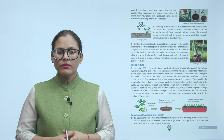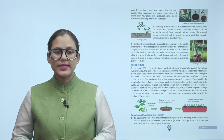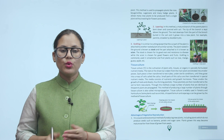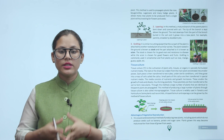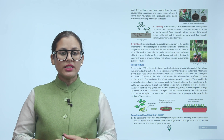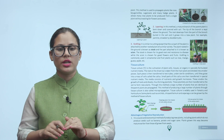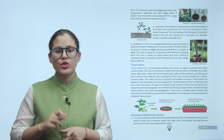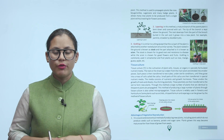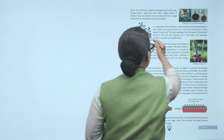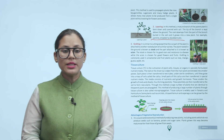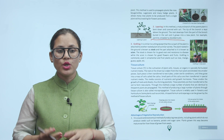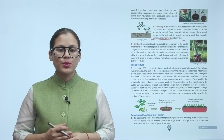Layering: a mature branch of the parent plant is bent down and covered with soil. The tip of the branch is kept above the ground. Roots develop from the part of the branch buried in the soil, and it grows into a new plant. Examples include jasmine, strawberry, and blackberry.